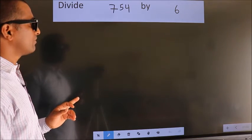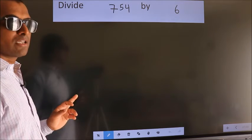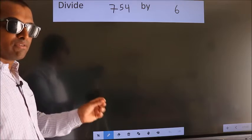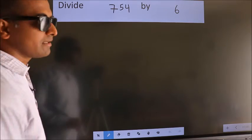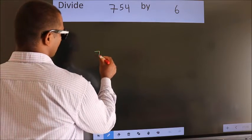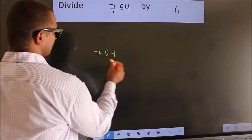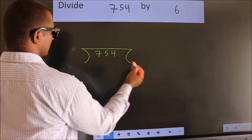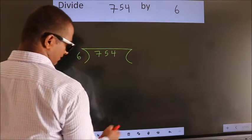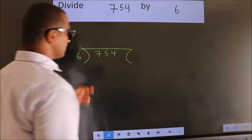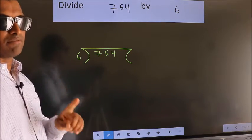Divide 754 by 6. To do this division, we should frame it in this way. 754 here, 6 here. This is your step 1.